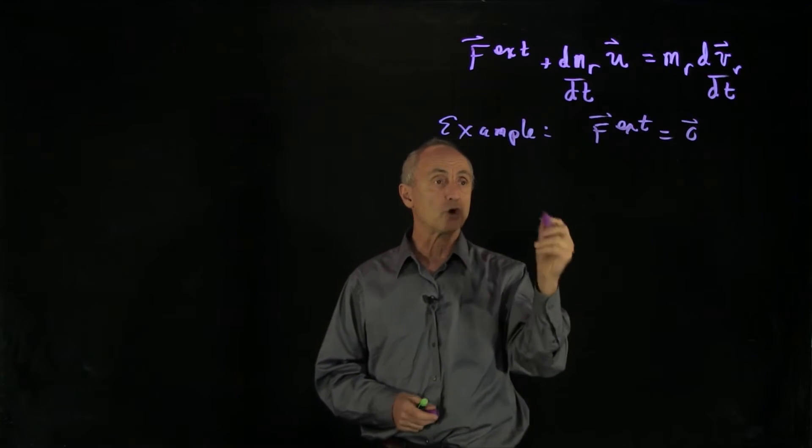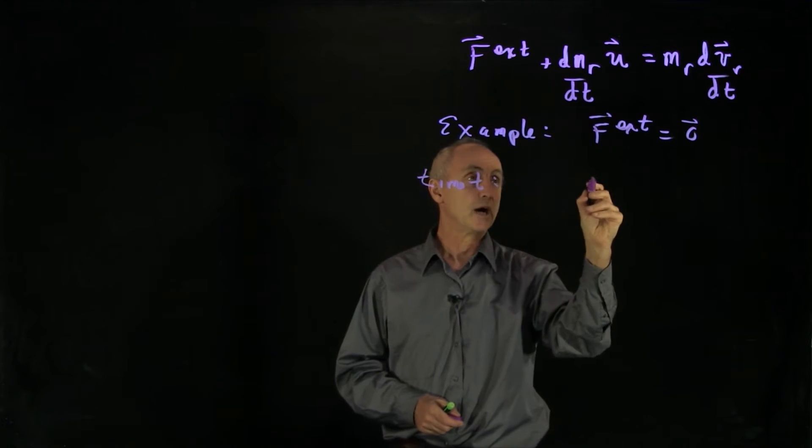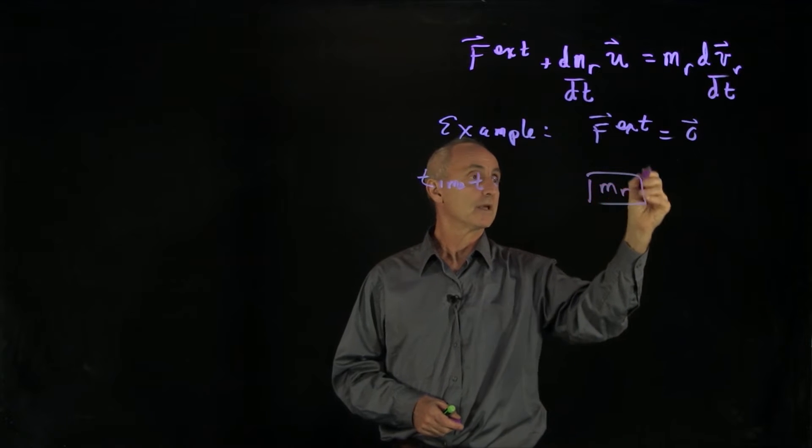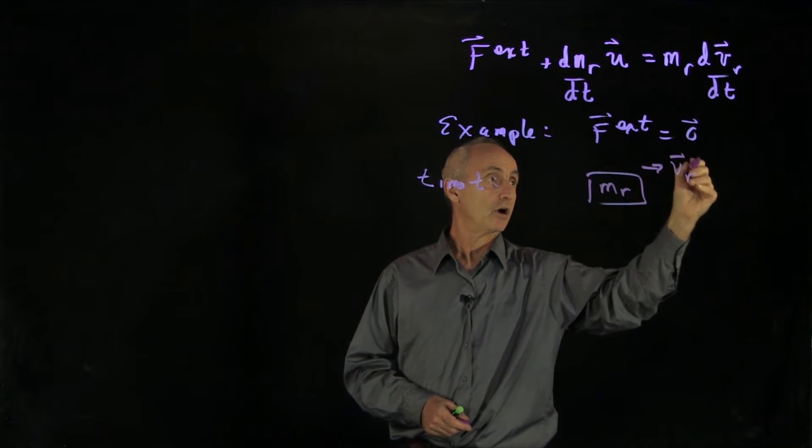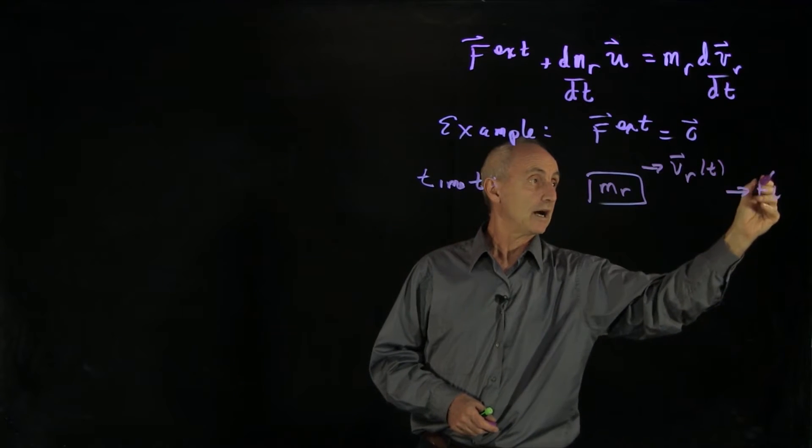Now, let's consider, we'll draw a picture at time t. Just to remind ourselves, we have mass of the rocket. It's moving with the velocity v_r of t. And we're going to call this our plus i-hat direction.